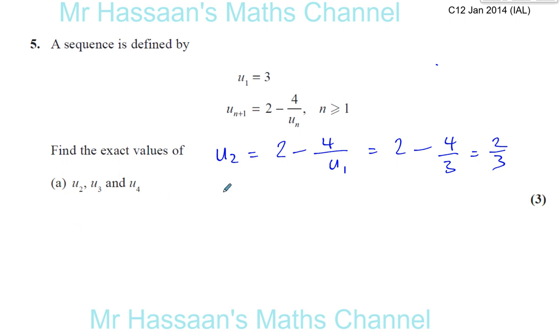And the third term is going to be 2 minus 4 over the second term, which is 2 minus 4 divided by 2 thirds, which is 2 minus 4 times 3 over 2, which is 2 minus 6, which is negative 4.